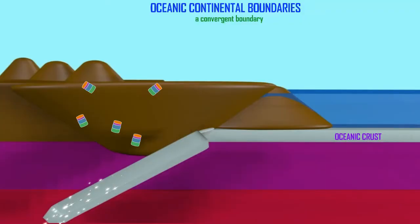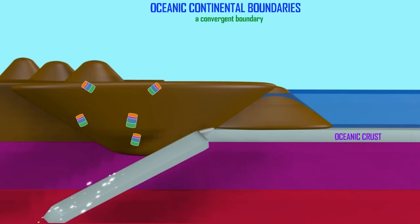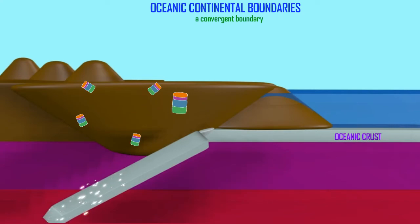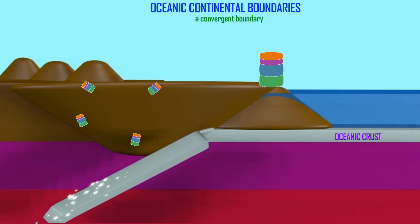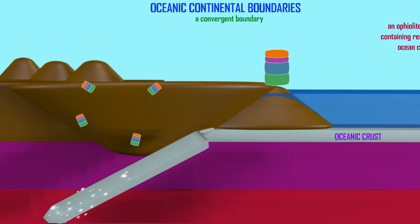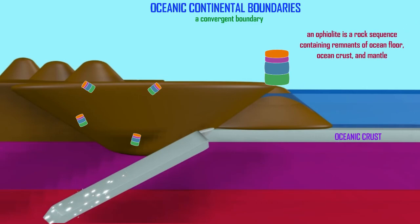One of the signs that an area lies over a subduction zone — an area where an oceanic plate once met a continental plate — is the presence of ophiolites. These ophiolites contain multiple layers: some which are representative of oceanic crust, some which are representative of the sediments over the oceanic crust, and then others underneath the oceanic crust which represent material from the mantle.